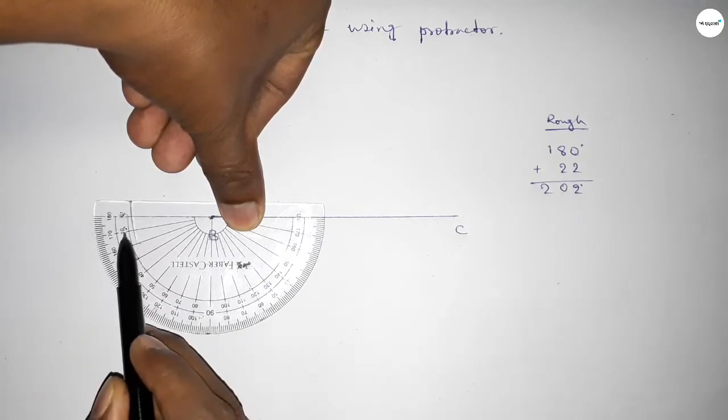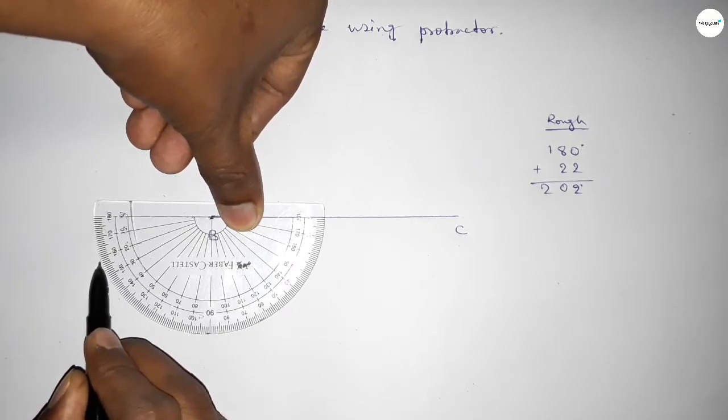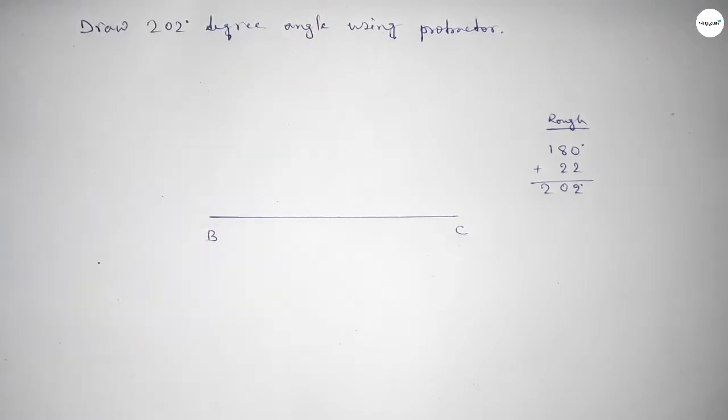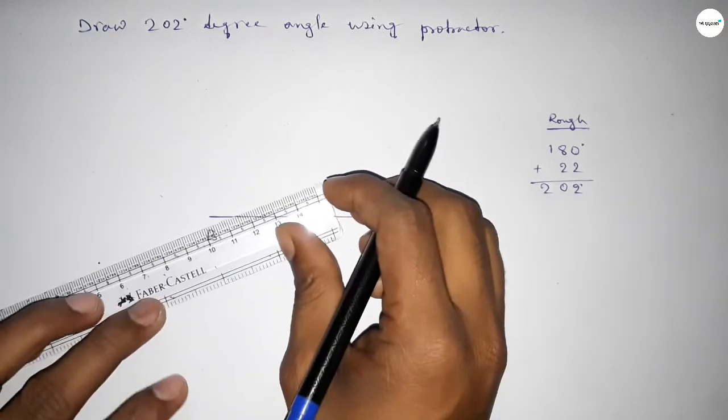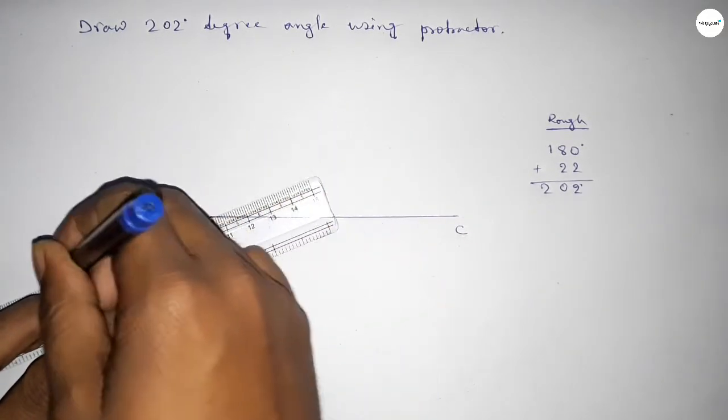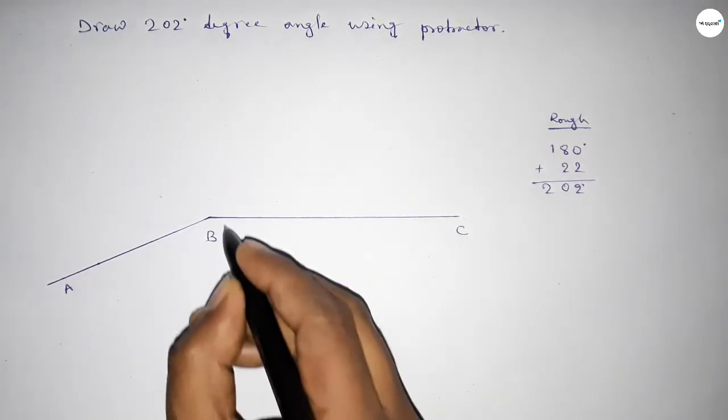Also this is 0, 10, 20, and this is 21, 22. So this is 22 degrees. By adding 22 degree angle with 180 degrees, then we can get 202 degree angle. Now joining this side, so taking here point A.